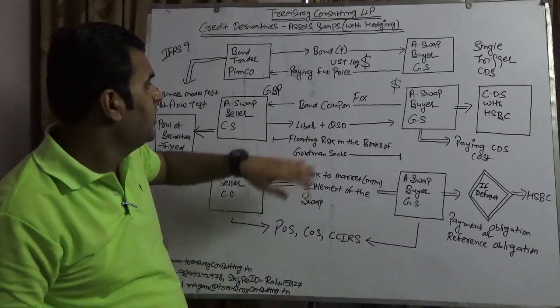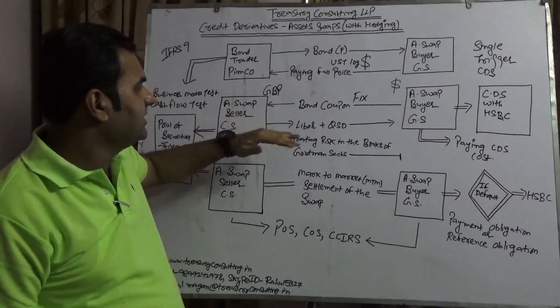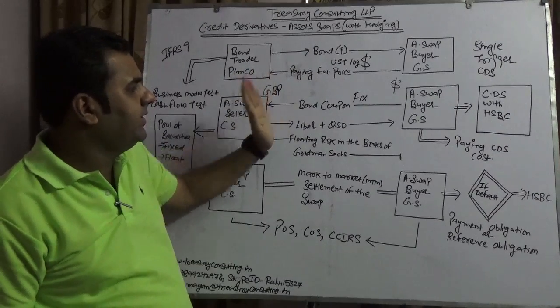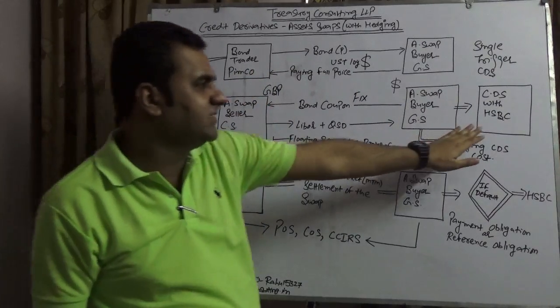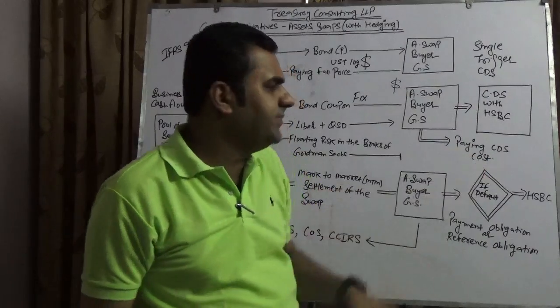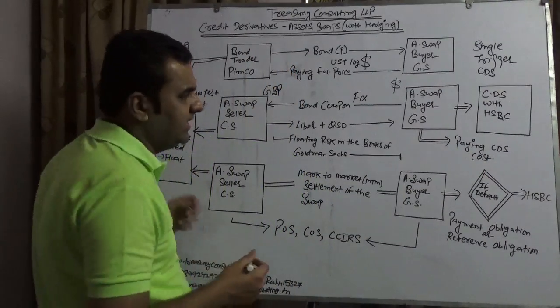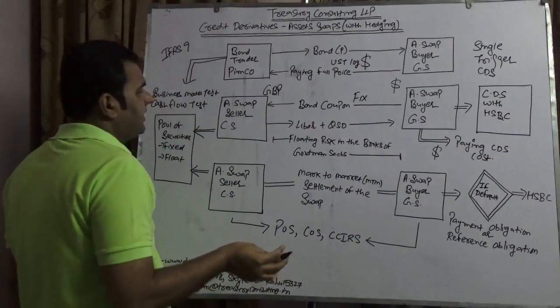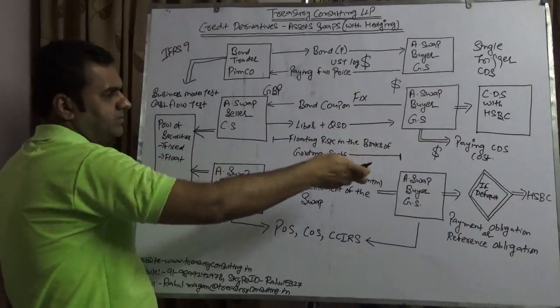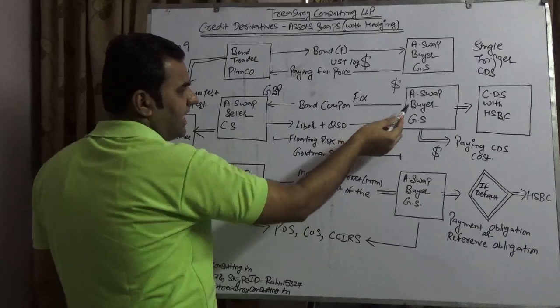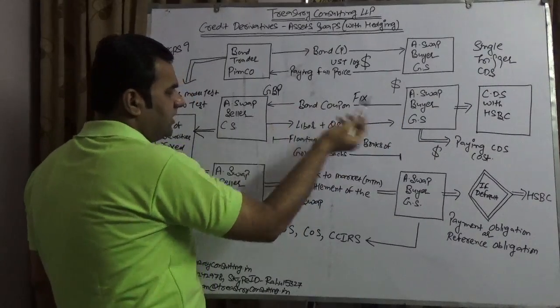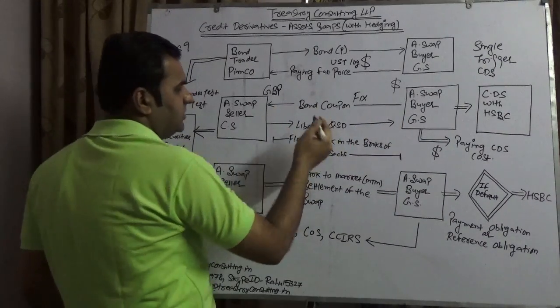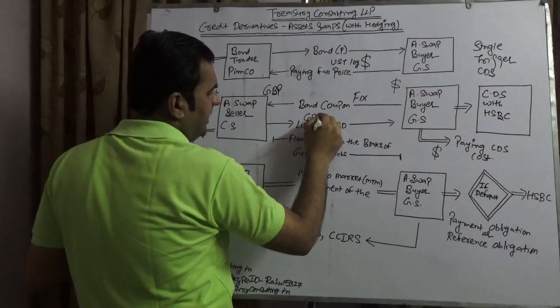They are paying the CDS price in dollar terms, while Credit Suisse is paying in GBP terms. The dollar coupon they are receiving, they are paying to Credit Suisse, and Credit Suisse is paying GBP LIBOR plus CDS spread.